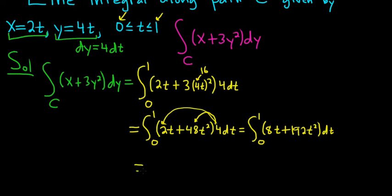This is equal to, so now we can integrate, right? There's a 1 here and there's a 2 here. So we can use the power rule. So this will be 8t squared over 2 plus 192t cubed over 3. And we're going from 0 to 1, just using the power rule for integration.